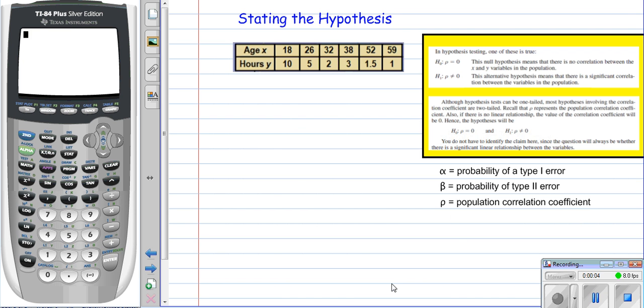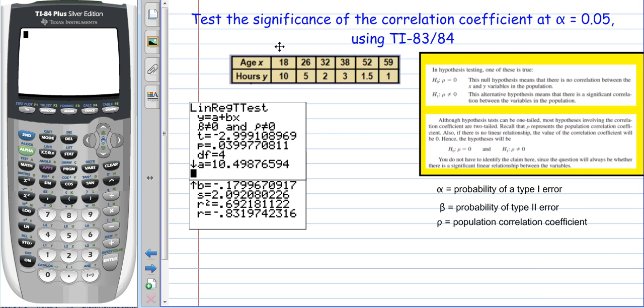Alright, this is going to be the second part to when we're actually trying to find the correlation coefficient and test the significance of the correlation coefficient. In this particular case, we haven't really talked about hypothesis testing very thoroughly, so we're really using the calculator to help us establish whether or not if someone said find the correlation coefficient and test its significance. We're going to breeze over hypothesis testing with this.